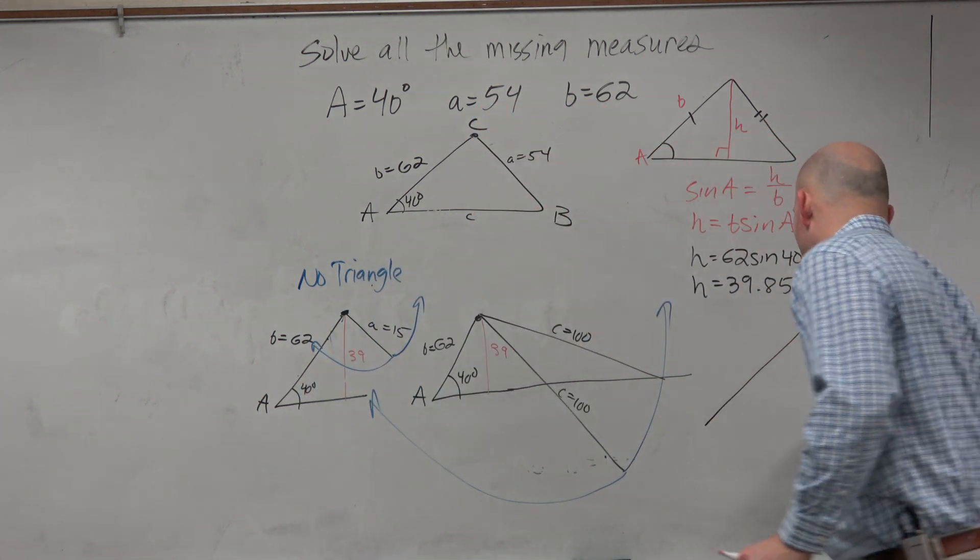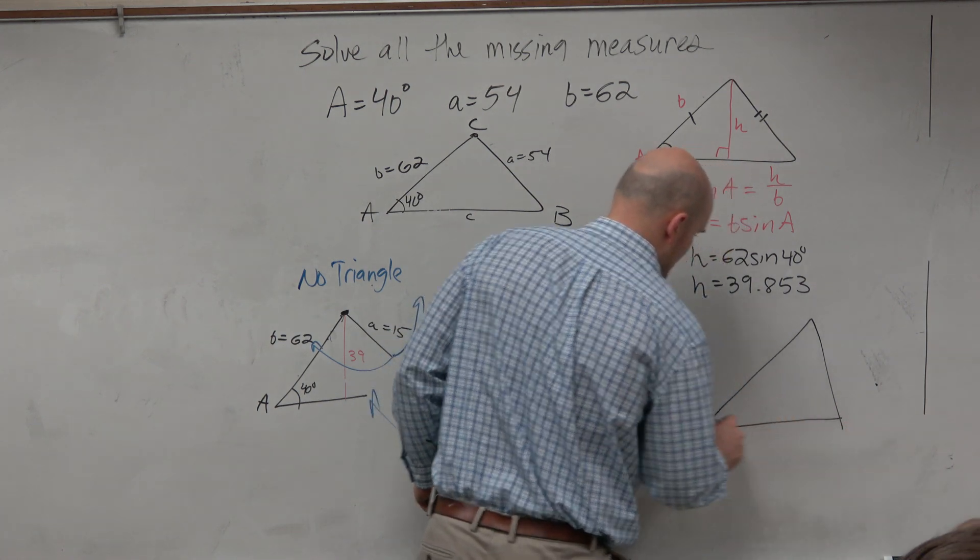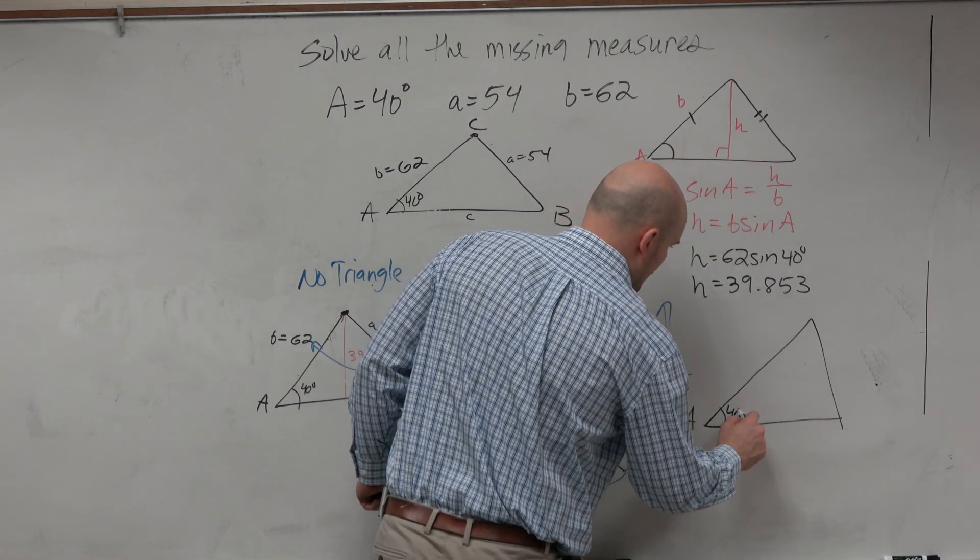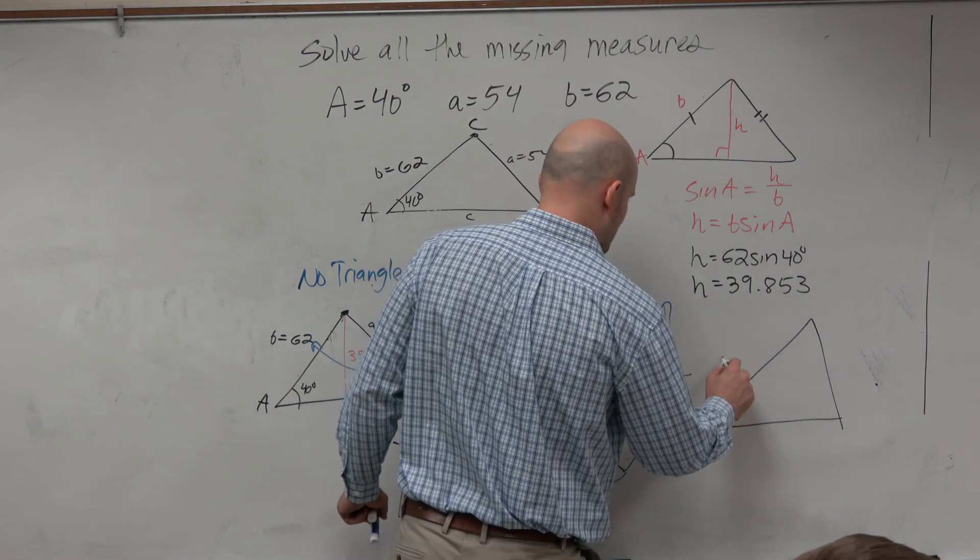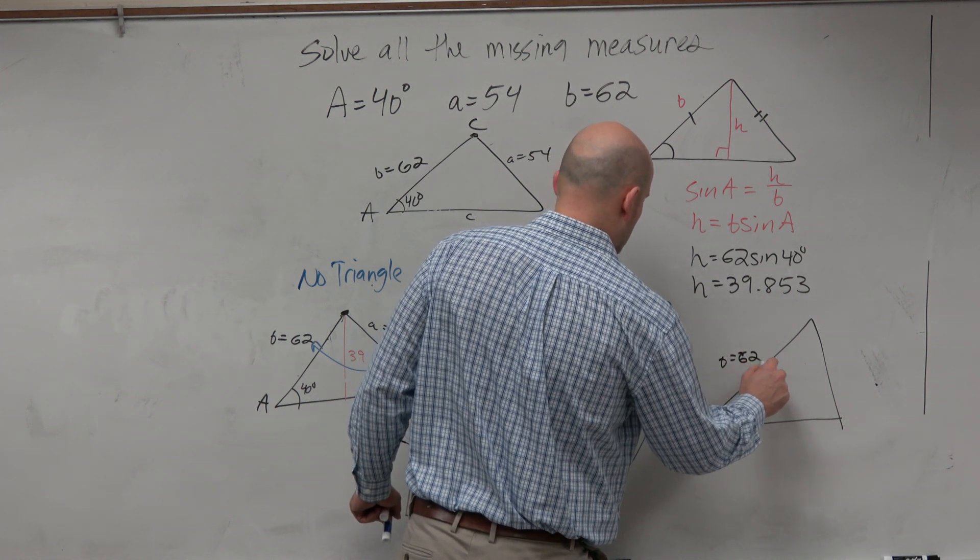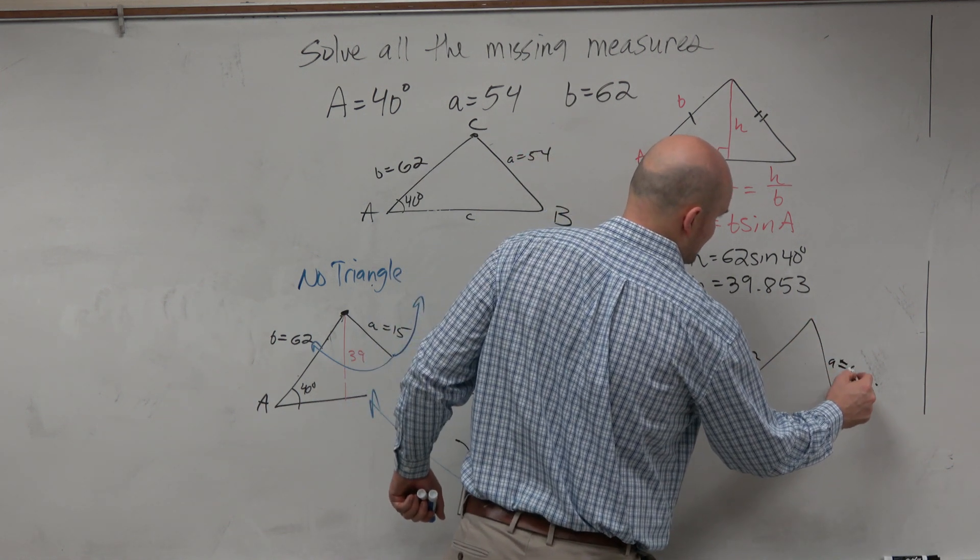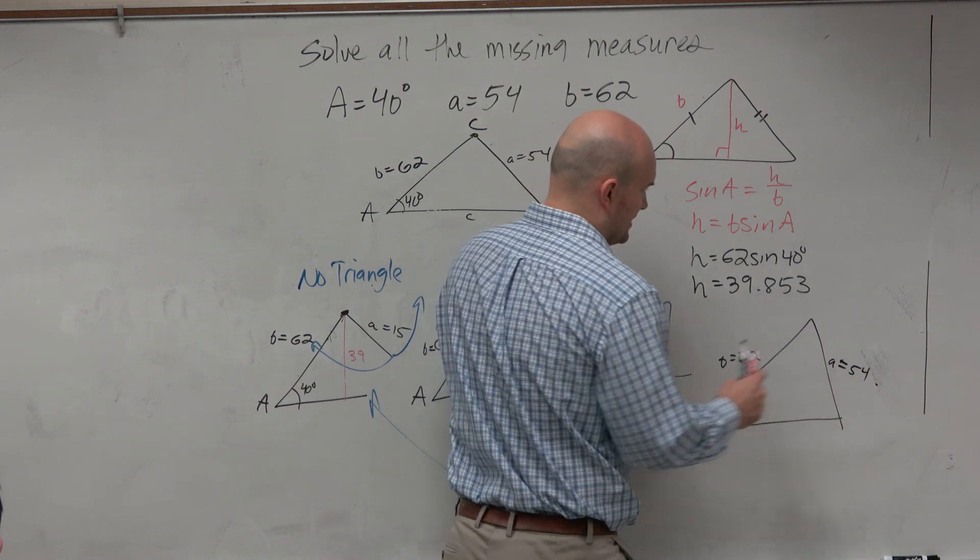Let's make sense of that one real quick. Going back to the same case, here's A, 40 degrees. Here's B, 62. And then this one, let's do this example we have, 54. And this is 39.